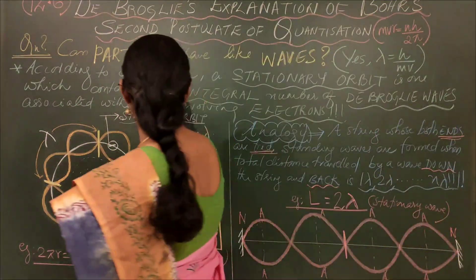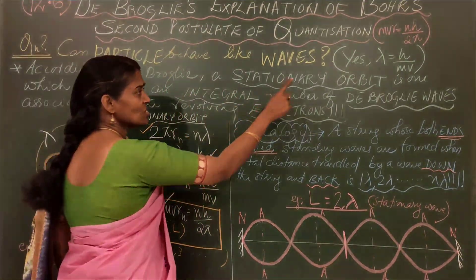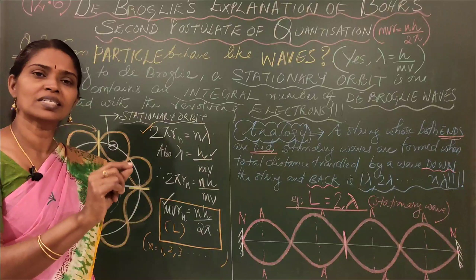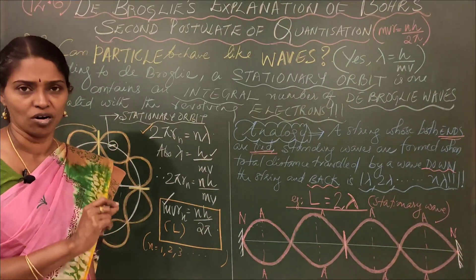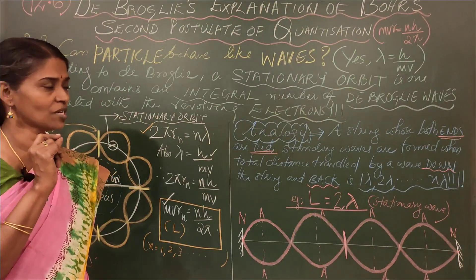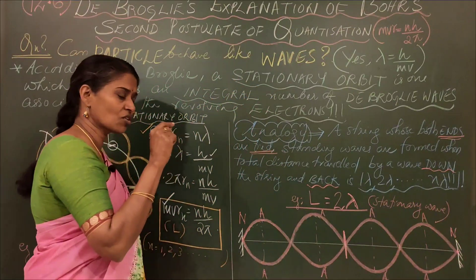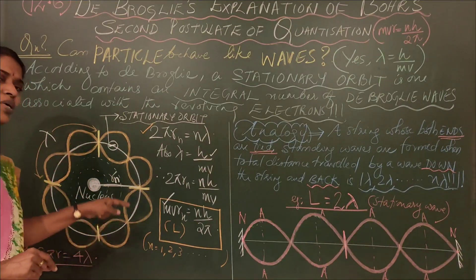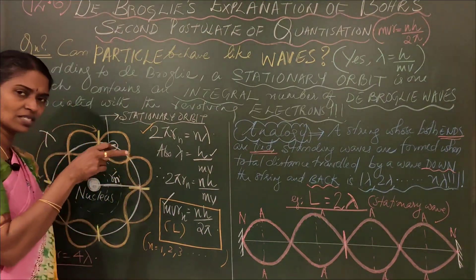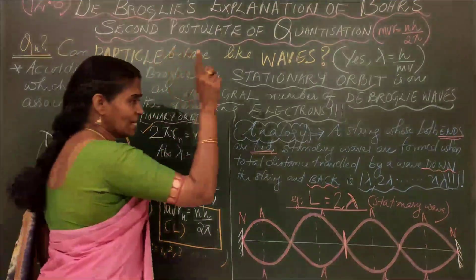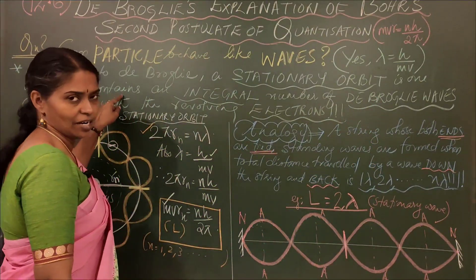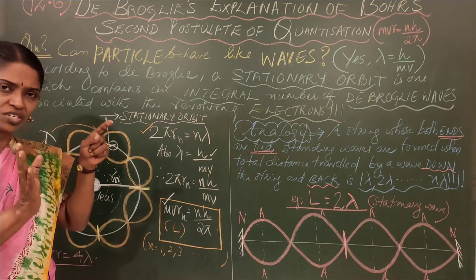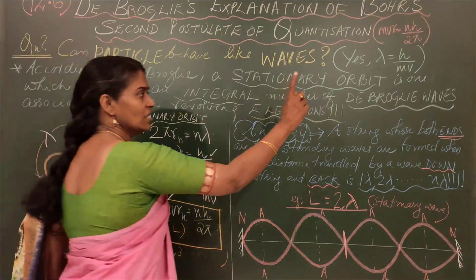According to de Broglie, a stationary orbit - this is a very important word - there should be certain specified non-radiating orbits known as stationary states. If the electron should move in a stationary orbit, the condition is one which should contain an integral number of de Broglie waves. It should consist of a certain fixed number of de Broglie waves associated with the revolving electrons.